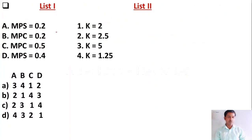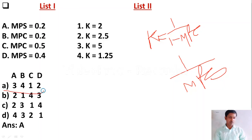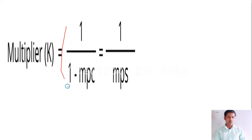Next, match List 1 with List 2 — MPS and MPC values with multiplier K values. If you know the two formulas — K equals 1 divided by (1 minus MPC), and K equals 1 divided by MPS — you can easily calculate. The right option is A. A is 3, B is 4: if MPS is 0.2, the multiplier is 5; C is 1, D is 2. Remember the two formulas of multiplier: 1 upon (1 minus MPC) and 1 upon MPS.